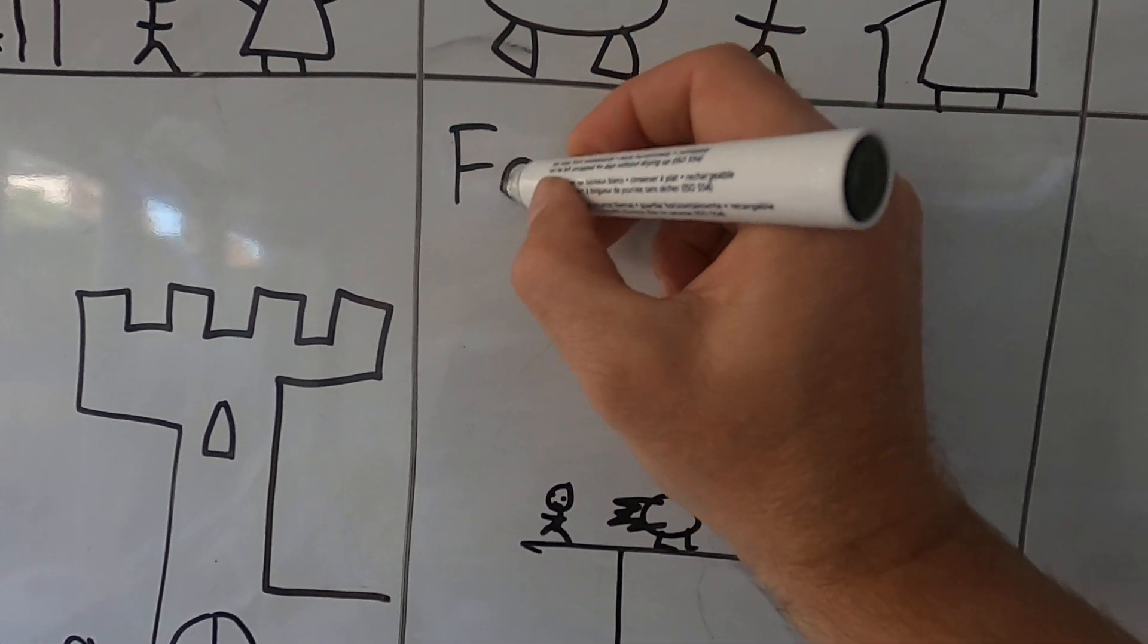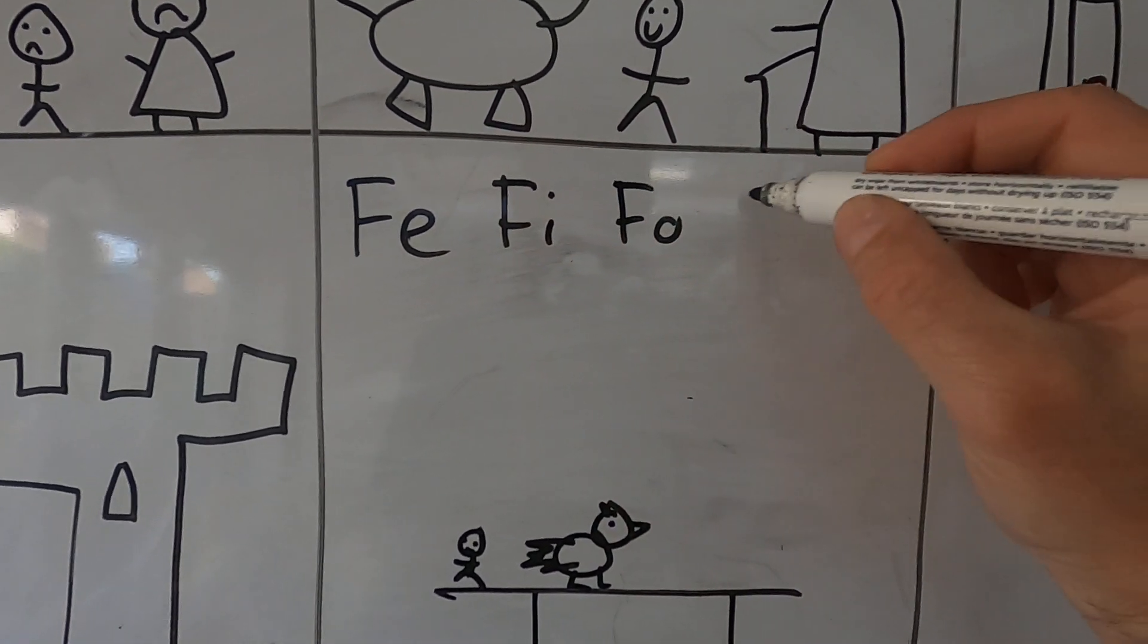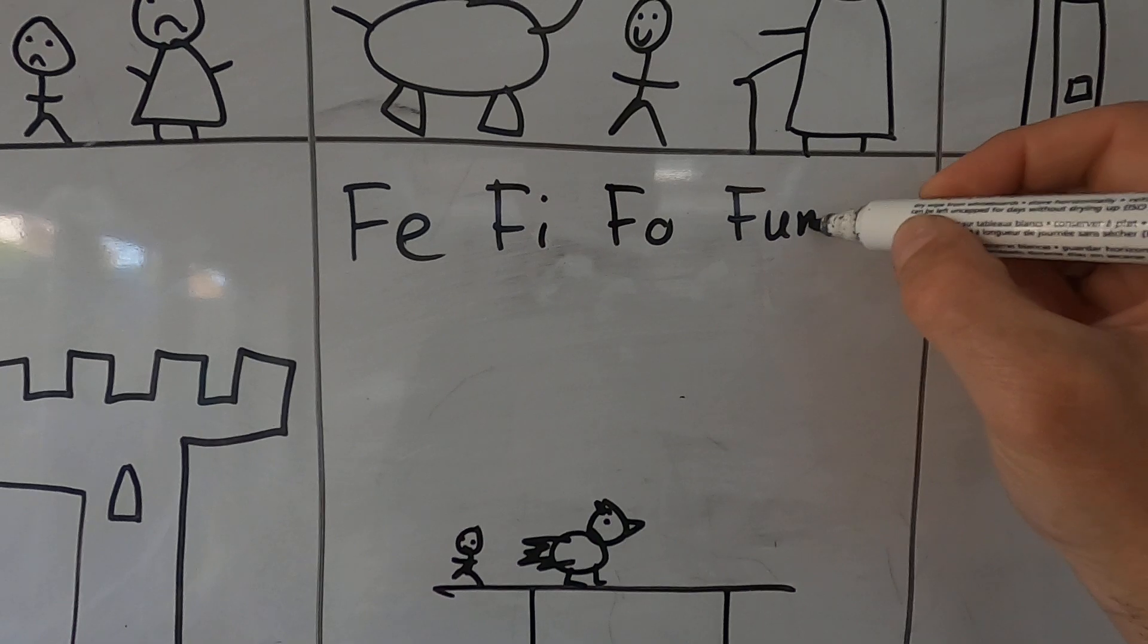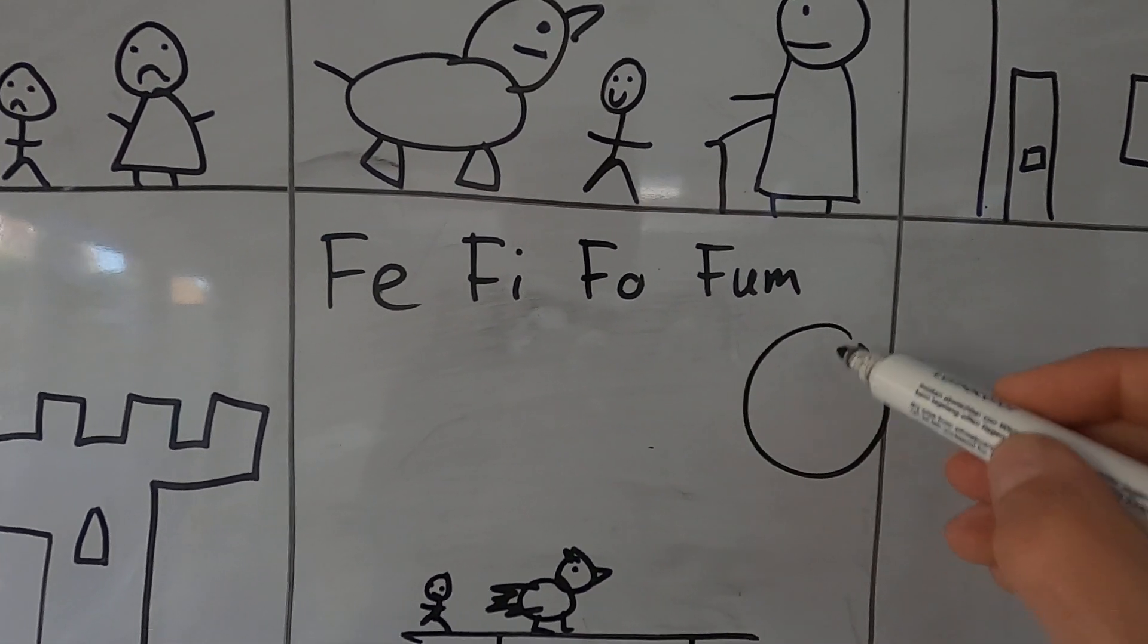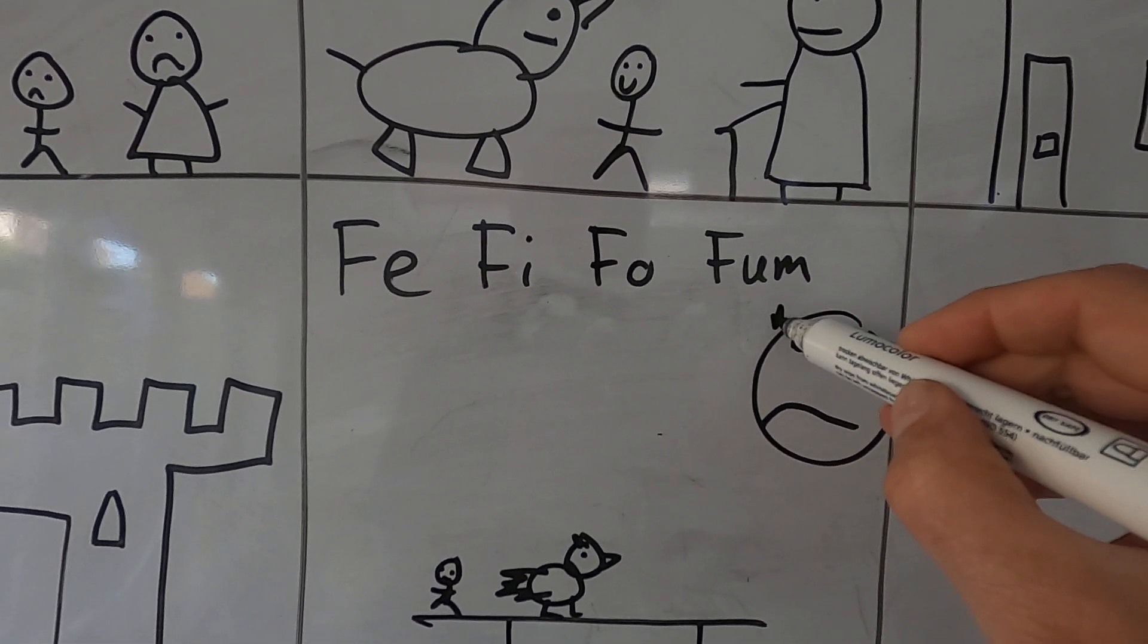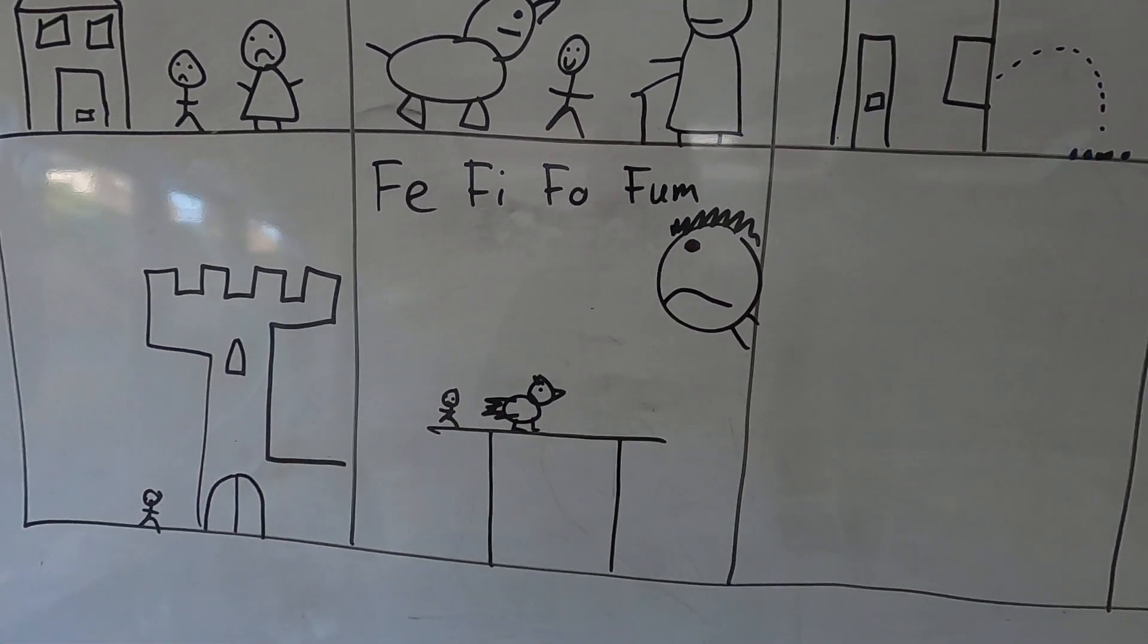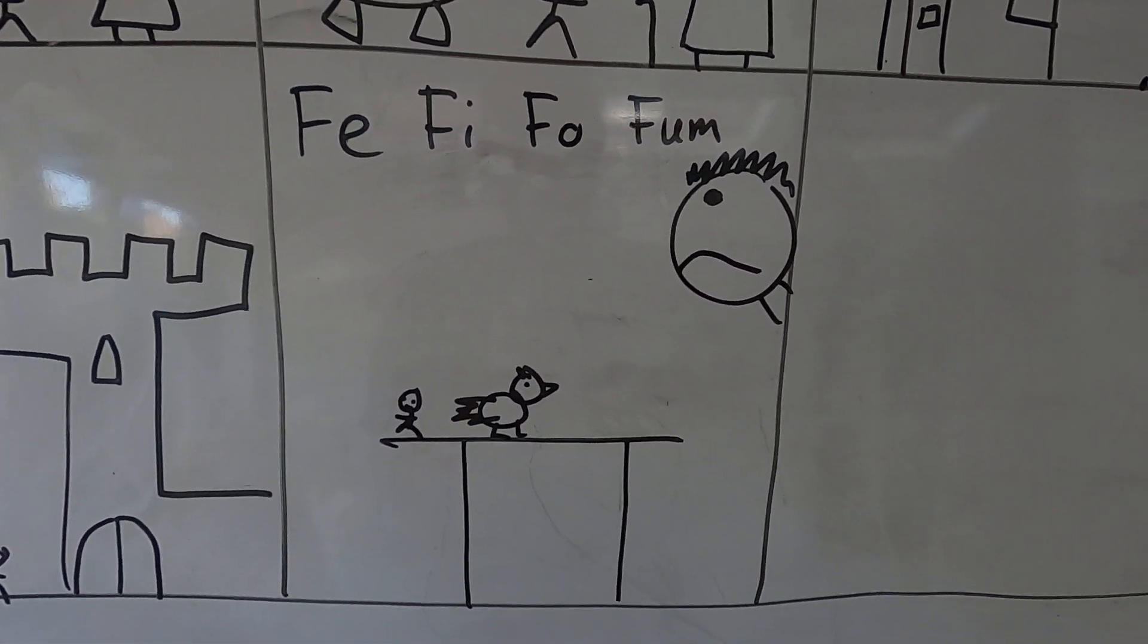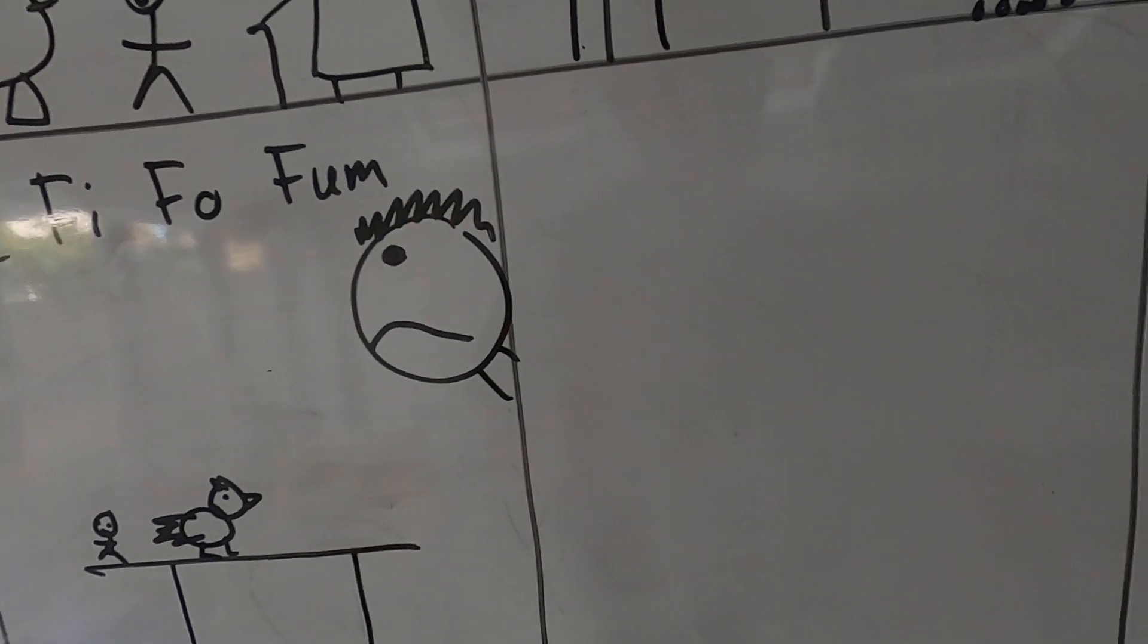Fee. Fie. Foe. Fum. The giant popped his head in the door. Who's stealing my golden goose? And Jack quickly ran to the beanstalk.